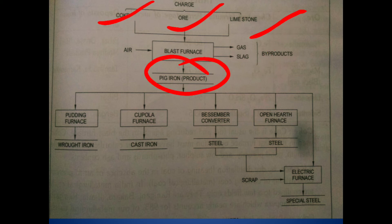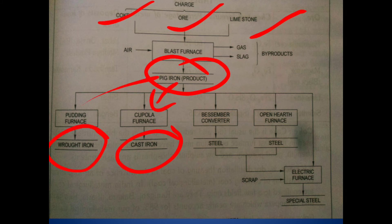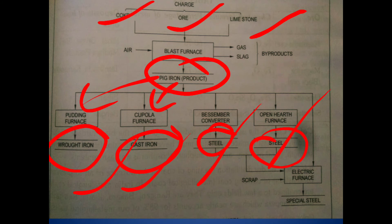From pig iron, we can make cast iron using a cupola furnace, wrought iron using a puddling furnace, and steels including special steels. So first, using the blast furnace, we make pig iron — that is the core concept of unit number three.